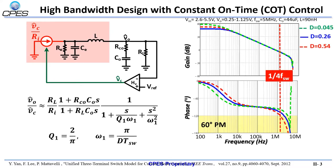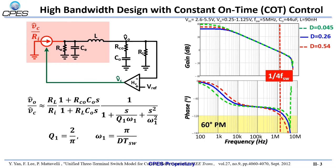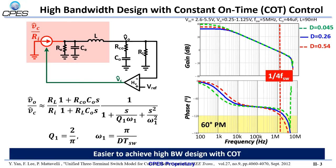For duty cycles smaller than 0.5, the double-pole is beyond the inclusion frequency and is negligible. Due to this moving double-pole, it is easy to achieve a high-bandwidth design with constant on-time control.